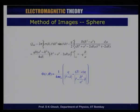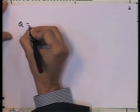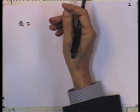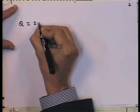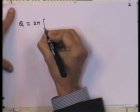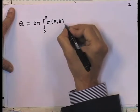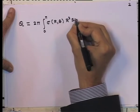Let us look at how much is the net charge induced on the sphere. The net charge is simply the surface integral of σ, calculated on the surface r = R. The integration has to be done with respect to angle θ only. There is a 2π from the φ integration, and I have to integrate from 0 to π the expression σ(R, θ) times the Jacobian R² sinθ dθ.